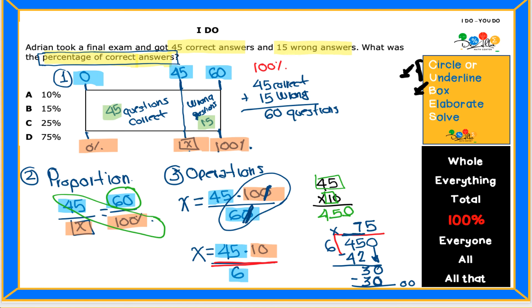So that means that the percentage is 75%. I'm going to check my question to make sure that's what they want. What was the percentage of correct answers? It does make sense because 45 is close to 60, which is 100%. 75 sounds reasonable. And I'm going to highlight my answer. And you guys did a great job. Thank you.